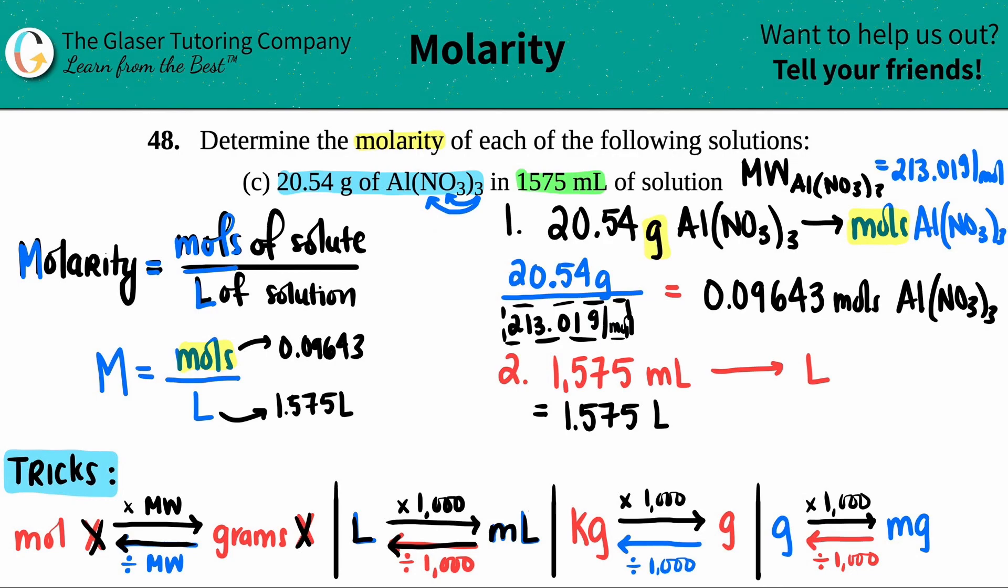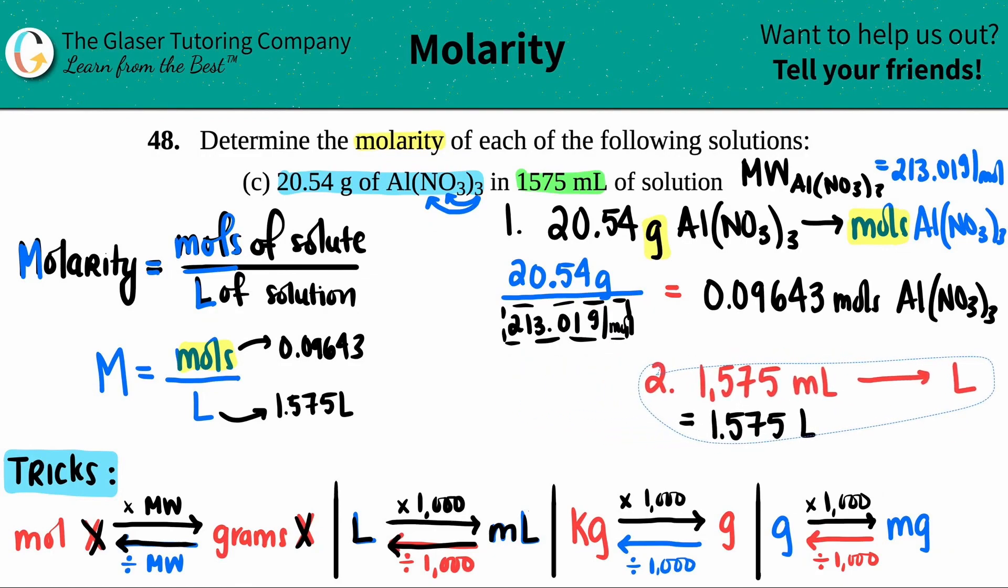And now I have my liter value. There you go. And now all I have to do is just put the two together. What I'm going to do is I'm just going to move this over and now we're ready to just do our math. Capital M, molarity equals 0.09643 divided by the 1.575. Let's see what we get. Molarity equals 0.09643 divided by 1.575. I get roughly 0.06123.